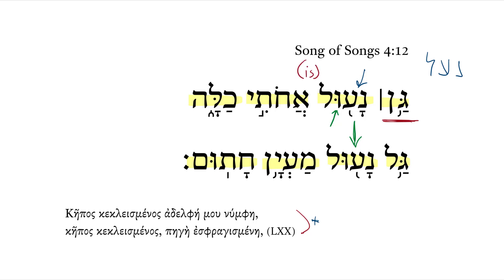So, a garden having been locked — this is a verbless clause. We would say 'is my sister bride,' and very often, as we've seen in the last several videos, this bride takes on the pronoun: my bride.